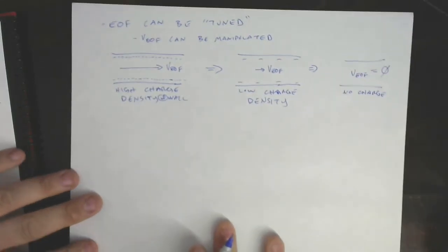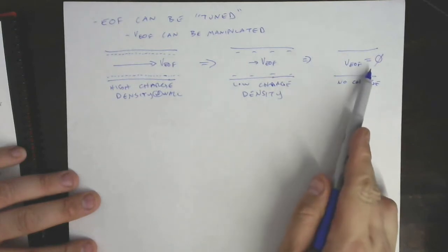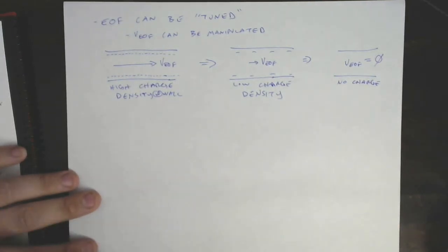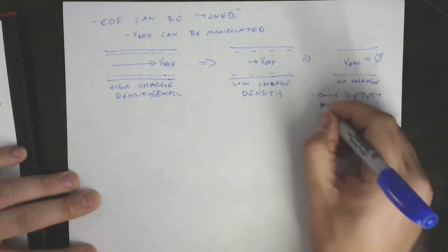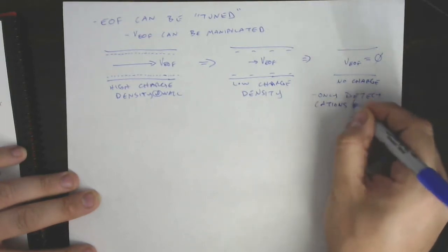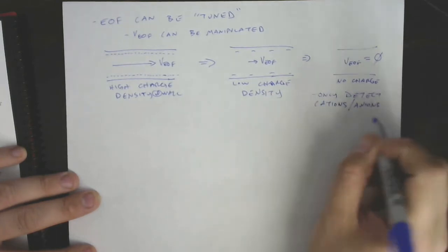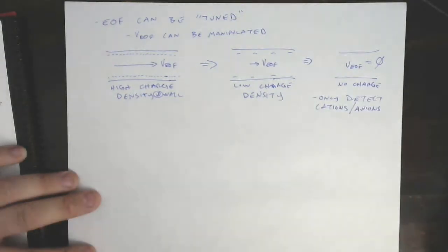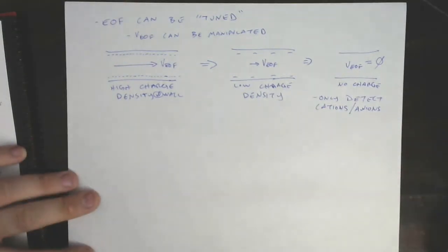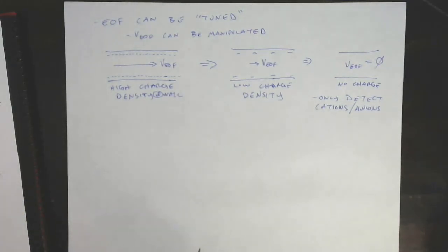Okay, so a caveat we should point out here is that when V_EOF is equal to zero, our apparent velocity is our electrophoretic velocity. Our apparent mobility is our electrophoretic mobility. There is zero velocity contribution from EOF, there's zero mobility contribution from EOF, and that means we would only detect cations or anions, but not both. We could manipulate that based on where we apply what voltages, but we could not necessarily see both under that condition. So sounds like a bad thing. We'll get in just a minute here to why we might want to do any of this.